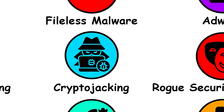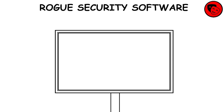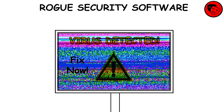Rogue Security Software. It's a form of internet fraud that misleads users into believing there is a virus on their computer and aims to convince them to pay for a fake malware removal tool that actually installs malware on their computer. It's usually spread through malvertising.